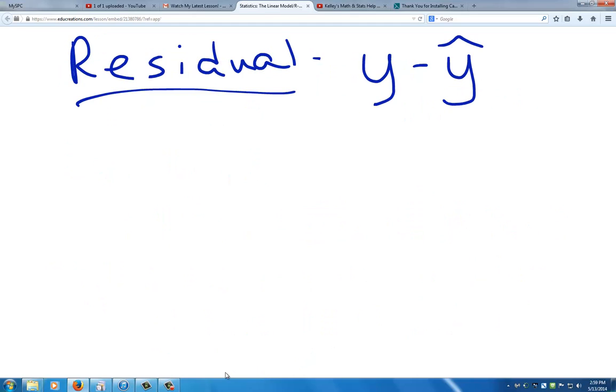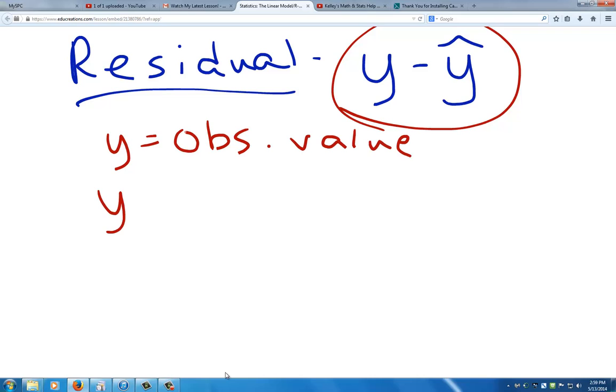Now let's take a look at the residual. The residual is given by the formula y minus y-hat and shows the difference between the observed value minus the predicted value. y is our observed value and y-hat represents our predicted value. In other words, it's the actual value minus the value that we predict.